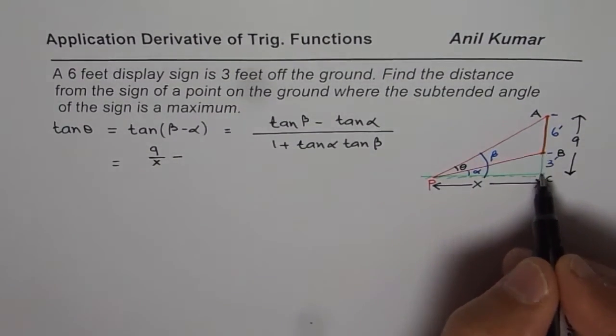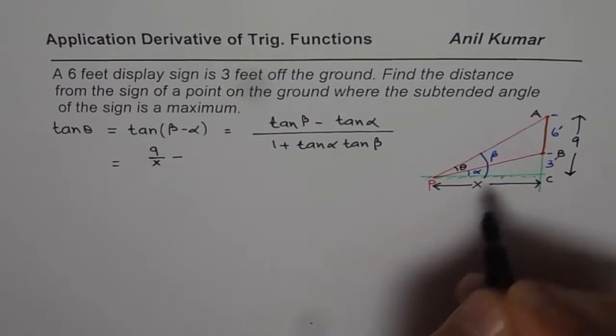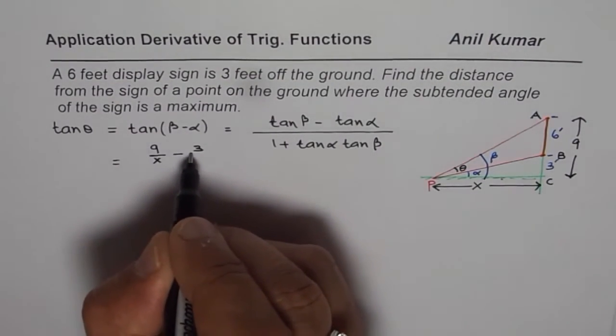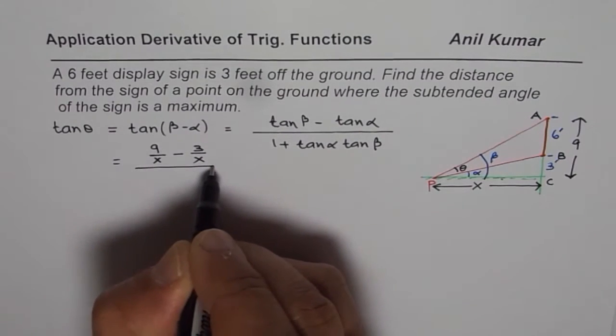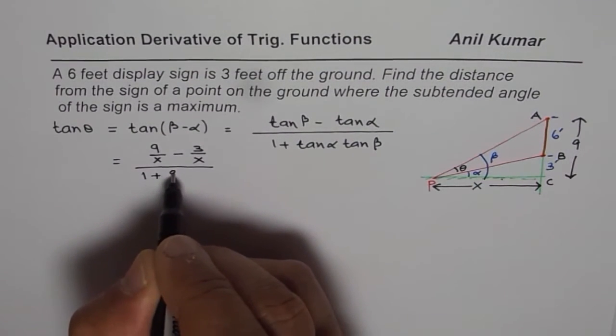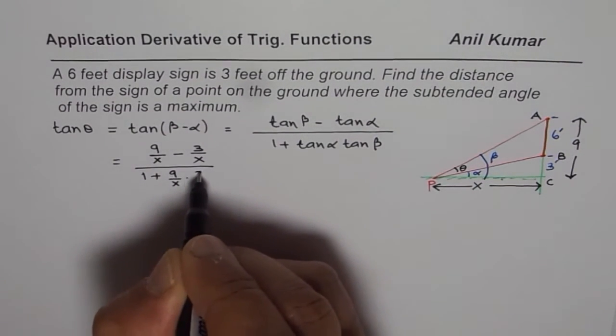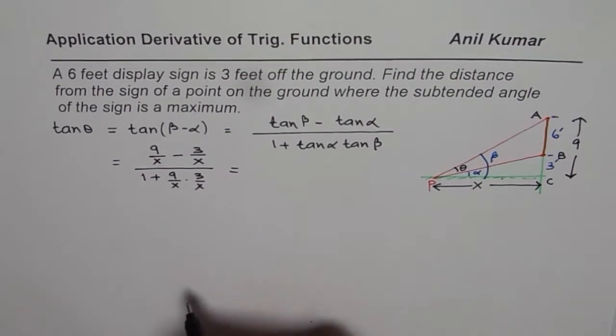Tan of alpha, this small triangle, is 3 over X. So 3 over X divided by 1 plus 9 over X times 3 over X. Let's try to simplify this.